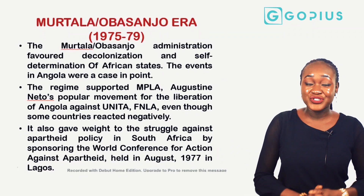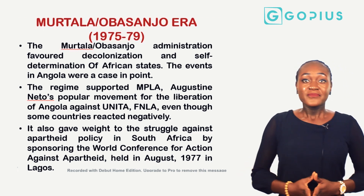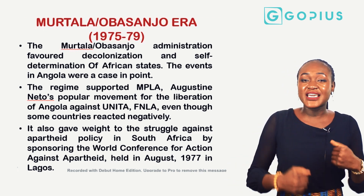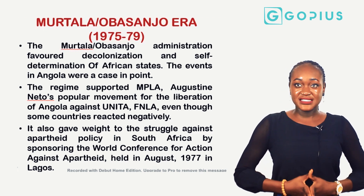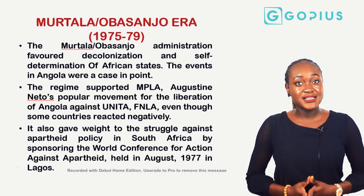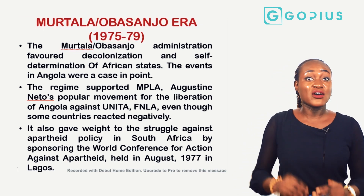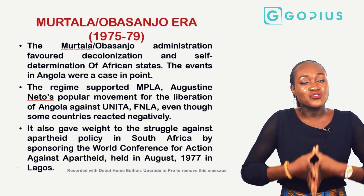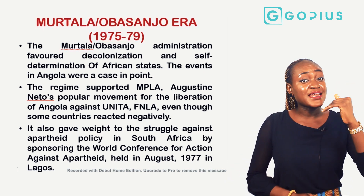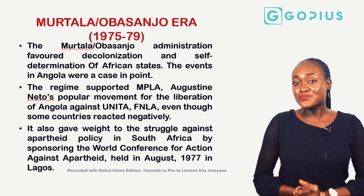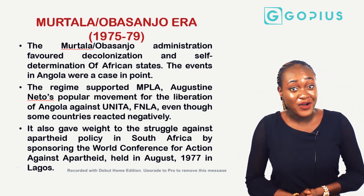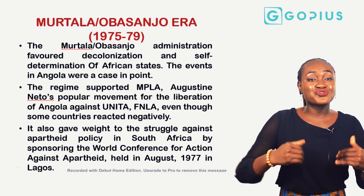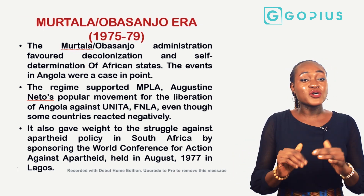The Murtala Mohammed and Obasanjo era ranged from 1975 to 1979. This administration favored decolonization and helped in the self-determination of African states, as seen in Angola. The regime supported Agostinho Neto's popular movement — the MPLA, the Movement for the Liberation of Angola — against UNITA. They also gave weight to the struggle against apartheid policies in South Africa by sponsoring the World Conference for Action Against Apartheid, held in Lagos.